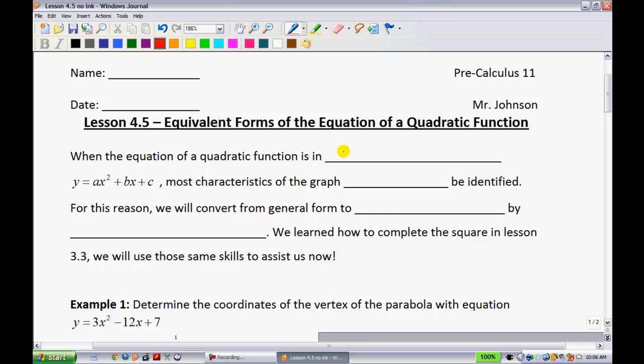When the equation of a quadratic function is in general form, so that would be y equals ax squared plus bx plus c, most characteristics of the graph cannot be identified. For this reason, what we're going to do is we're going to convert from general form to standard form by completing the square. Now, completing the square, that's something that we actually played around with a little bit in 3.3. So, the good news is, you guys will have seen some of this before.